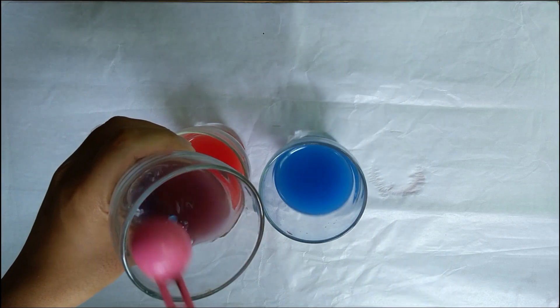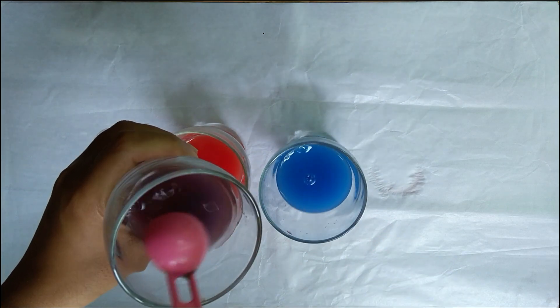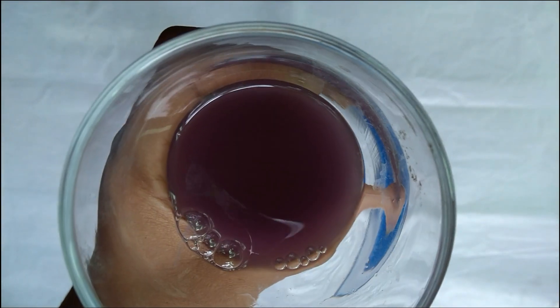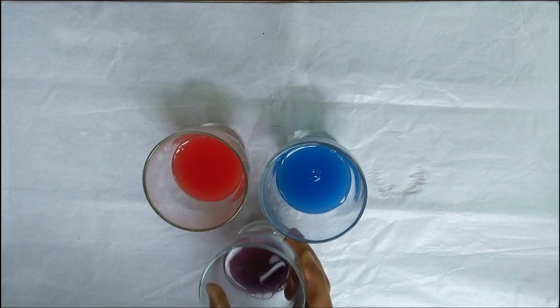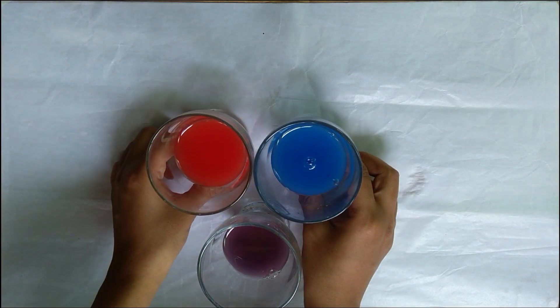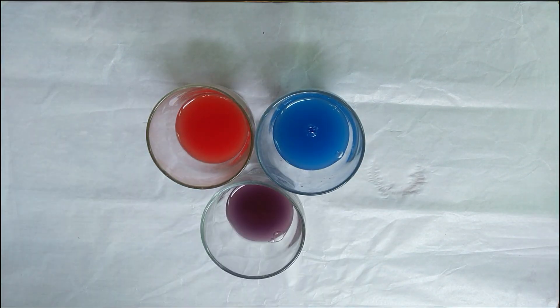The color starts changing and we get the violet color. Red and blue gives us violet color.